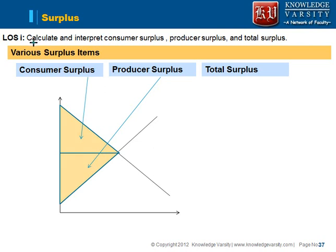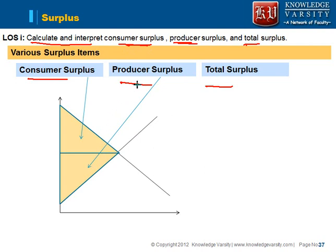In this LOS, we are supposed to compute, calculate and interpret the surplus — consumer, producer and total surplus. These are the three surplus items: consumer, producer and total surplus. We need to understand what this surplus is and how it gets generated.